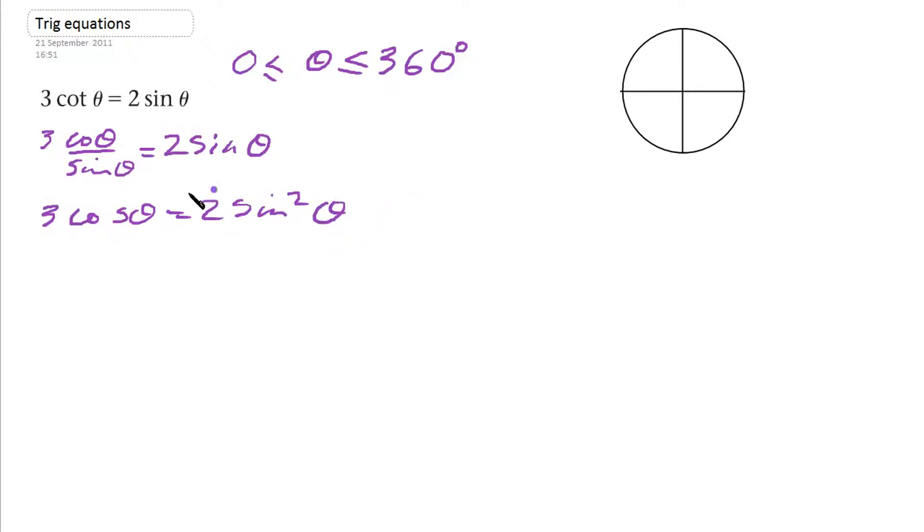Now we want to try and get this all in cosines, because with sine squared we have a relationship between sine and cos. So we're going to use 1 minus cos squared here. So 3 cos theta equals 2 open brackets, 1 minus cos squared theta.